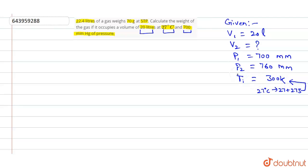So this is 27 degrees Celsius. And what is T2? T2 is 273 K, which is at STP. Temperature at STP is 273 Kelvin.